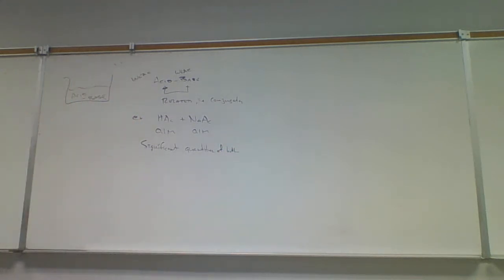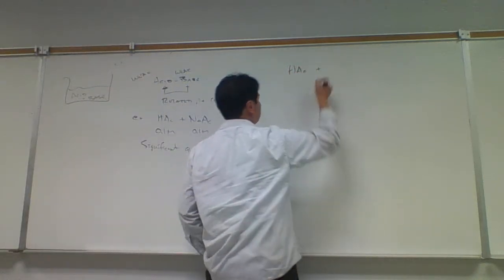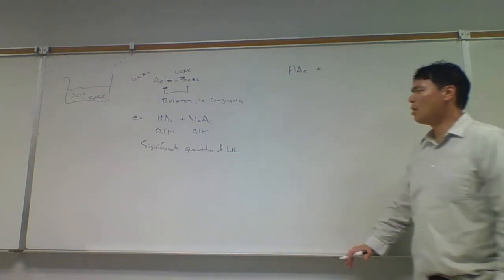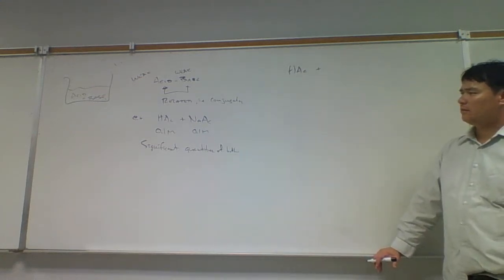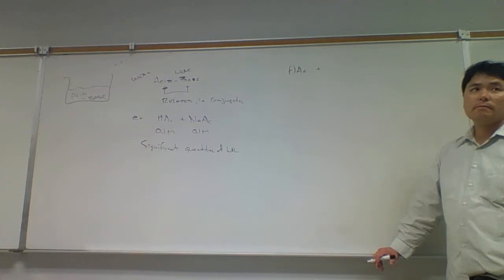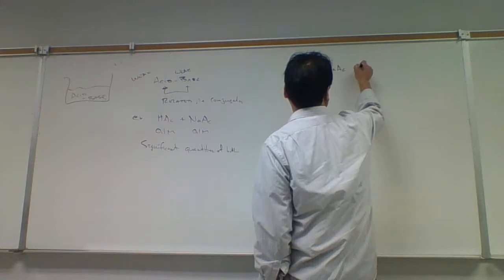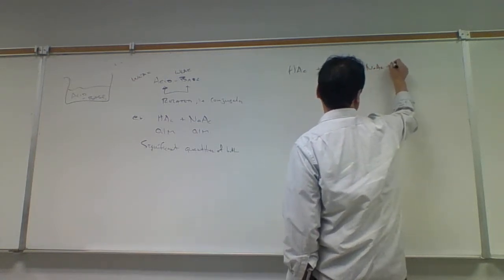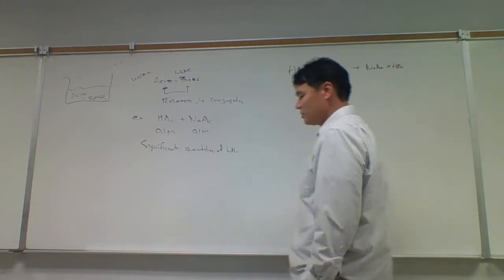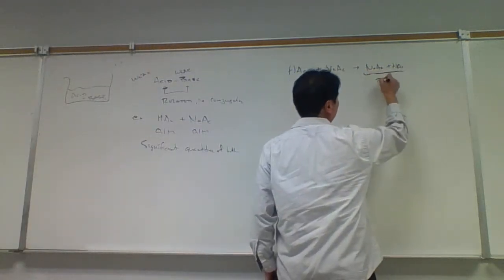In Chapter 17, the approach to the problem is we take the strongest acid and react it with the strongest base. The strongest acid present here would be acetic acid, and the strongest base present would be acetate — that's stronger than water. So acetic acid plus sodium acetate yields sodium acetate plus acetic acid. This is like a double replacement acid-base reaction. Nothing really changed, so we say there's no reaction here.